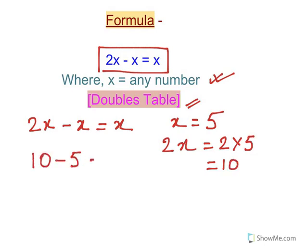If 10 minus 5 is there, without counting the kid can write 5. Why? Because x is 5 here, 2x is 10. So whenever 2x minus x is there, without counting the kid can write x, that is the number in the x position.